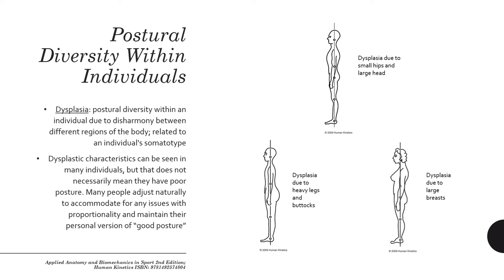When we talk about good posture, what it looks like will be a little different for everybody — there is postural diversity between individuals. This diversity is referred to as dysplasia: postural diversity within an individual due to disharmony between different regions of the body. Dysplasia can also be related to an individual's somatotype, and there are various different types.